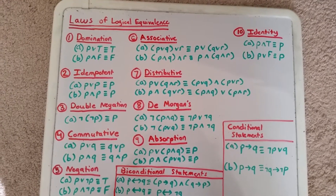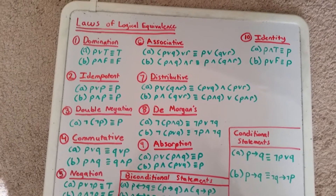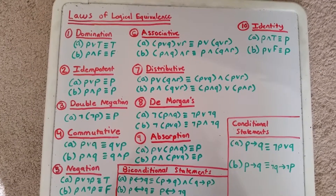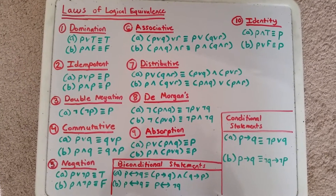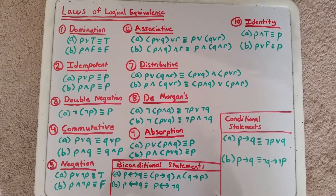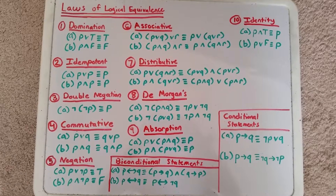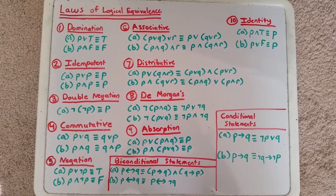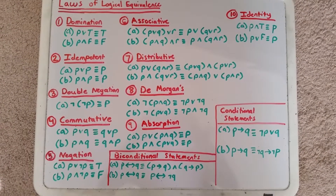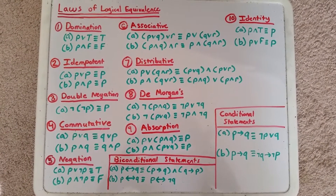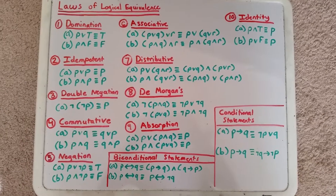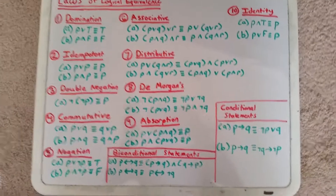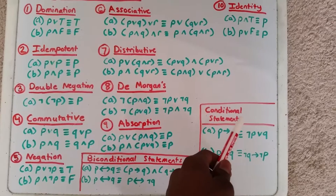These are the laws of logical equivalence. With these laws, you can solve any logical equation dealing with truth tables or without truth tables. These are the 10 laws that you need to know, along with two conditional statements.